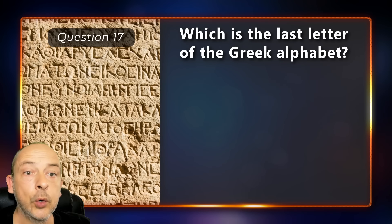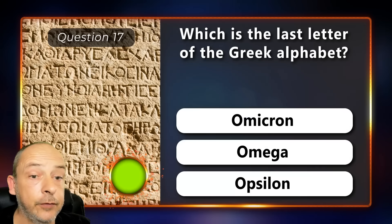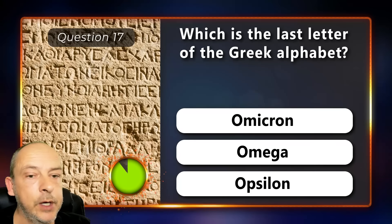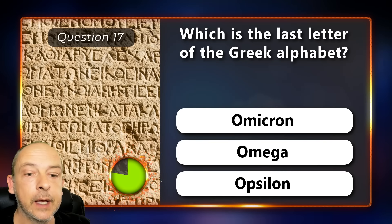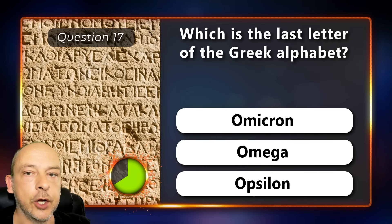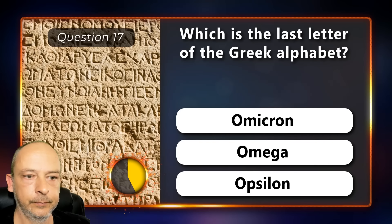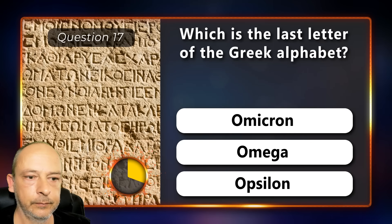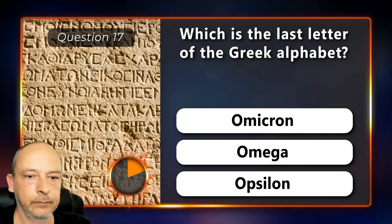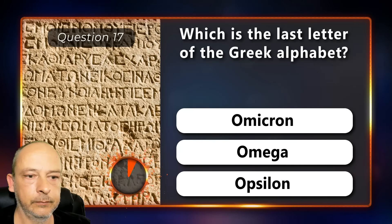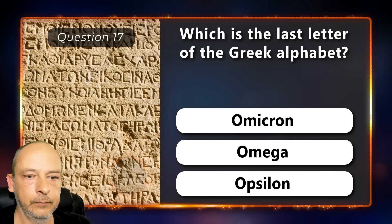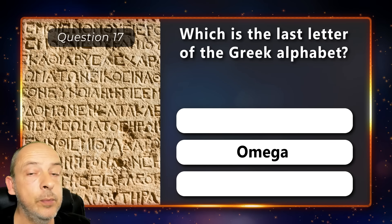Which is the last letter of the Greek alphabet: is it omicron, omega, or epsilon? It is omega.